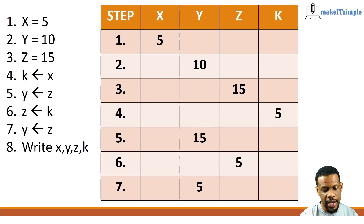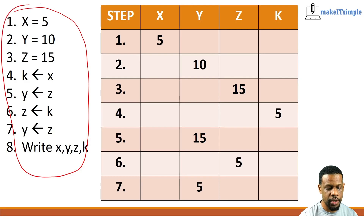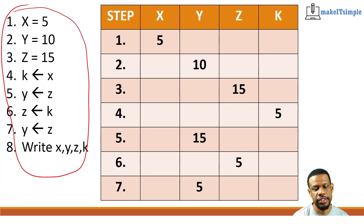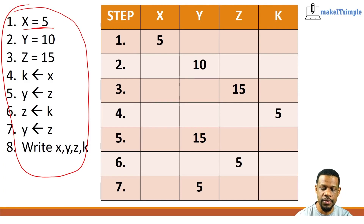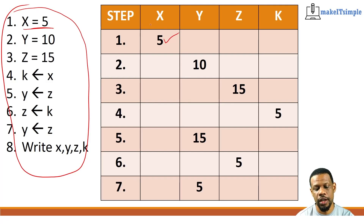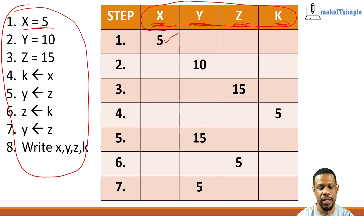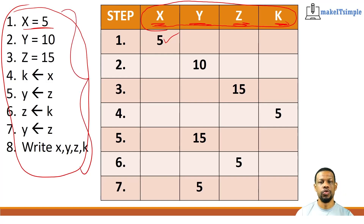In a trace table, you have an algorithm on the right-hand side. With this algorithm, we want to check through everything that is taking place. This algorithm says set x as five. The first step is executed by setting x as five. When doing a trace table, you always want to lay out all the variables available in the algorithm — we have x, y, z, and k. You create a table to track every variable and the changes that take place in each one.